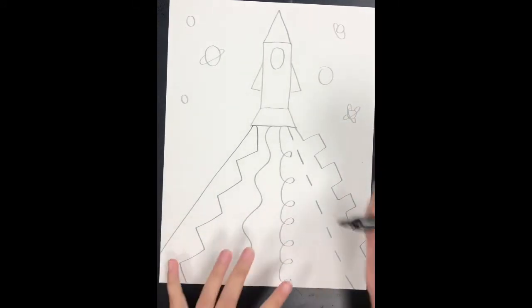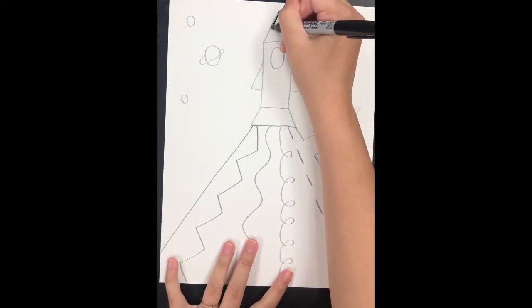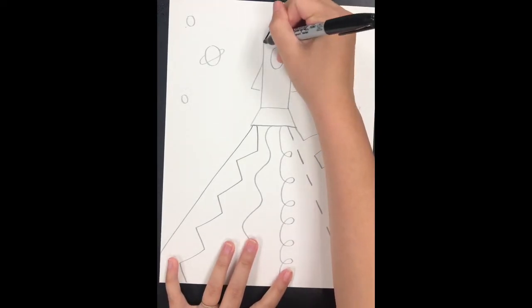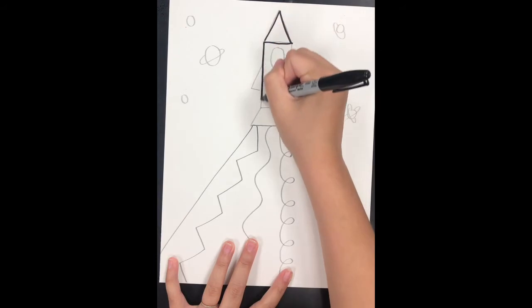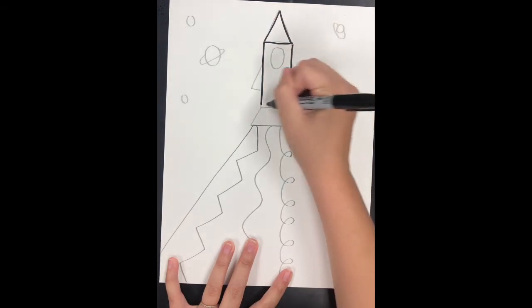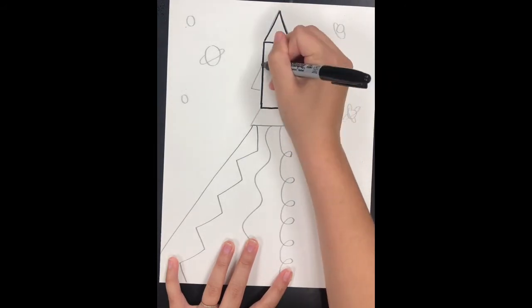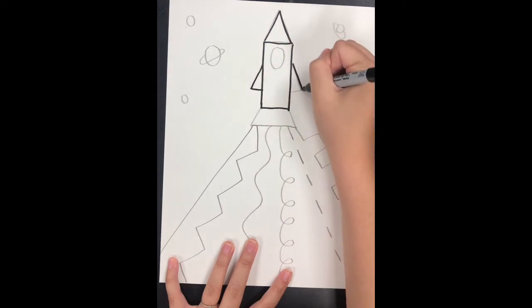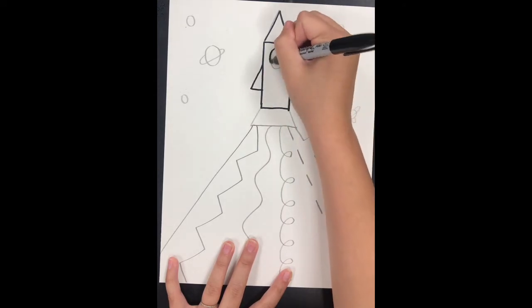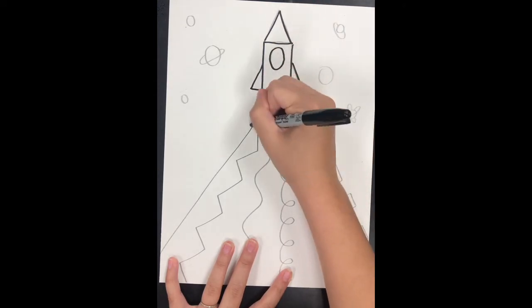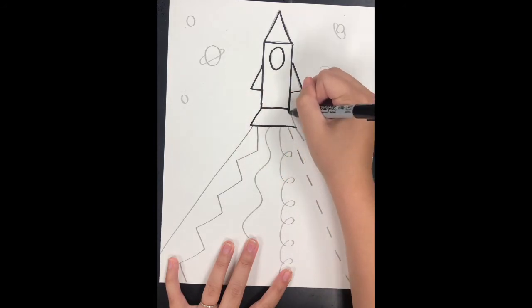Now we're going to practice tracing. I'm going to take my black marker and I'm going to pretend it's like a tightrope walker, and my pencil is my tightrope. I want it to go really slowly on top of my lines and I don't want it to fall off. So I'm not drawing anything new, I'm just taking my marker and going on top of my pencil lines.